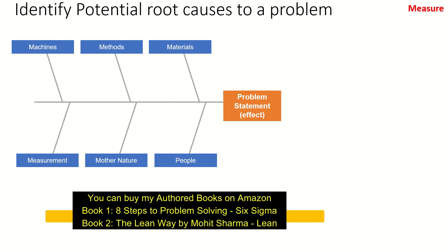The second phase of DMAIC methodology is the Measure phase. In this phase, we identify the potential root causes to a problem, and the best way to do that is a brainstorming session. The kind of graph you are seeing on my slide is a fishbone diagram. A fishbone diagram helps you identify the potential root causes to a particular problem. At the head of the fish you write the problem statement, and then you have six different heads: man, machine, material, method, and mother nature, and you identify the various sub-causes under these broad heads. I have a detailed video on project charter and fishbone diagram — I will attach the link in the description box below.